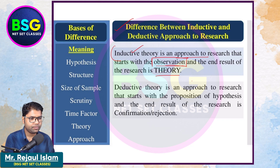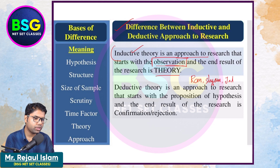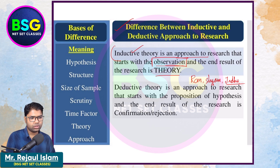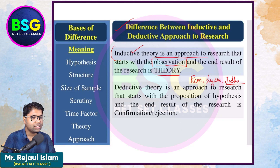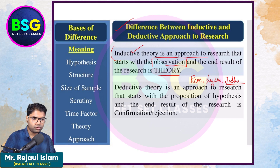So we have Ram known as a person, Sam known as a person, and Jodhun known as a person. From these particular points we ask general facts and derive the truth. This is the truth — inductive theory takes a particular point and arrives at a general concept.